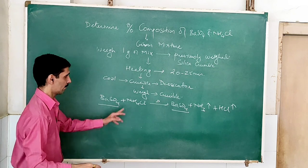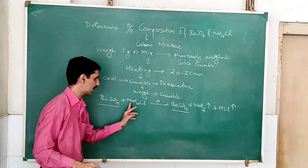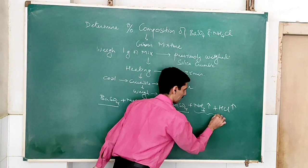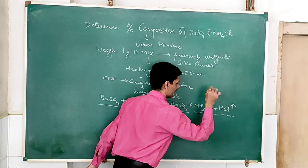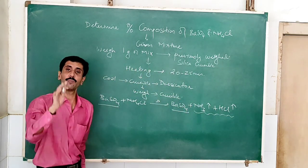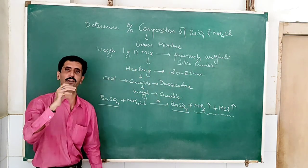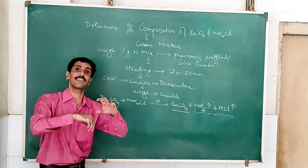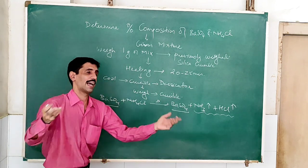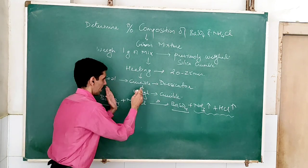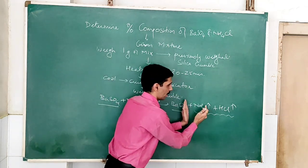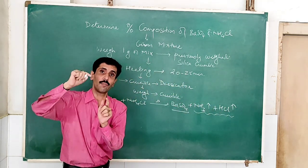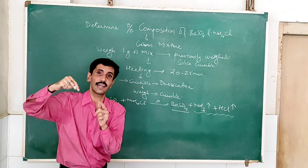But what about ammonium chloride? Ammonium chloride decomposes into two components: NH₃ as well as HCl. And that is the beauty of this experiment — when ammonium chloride decomposes into ammonia and HCl, both of which are in the form of a volatile component.